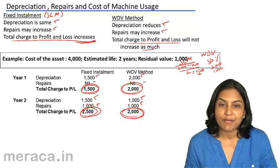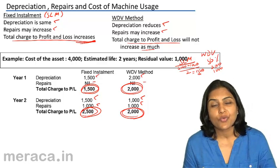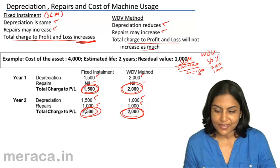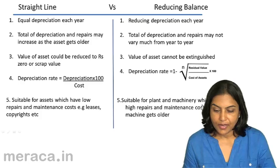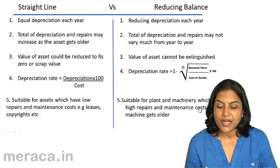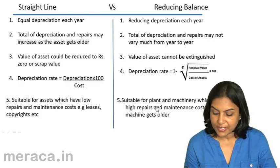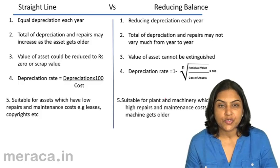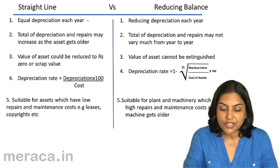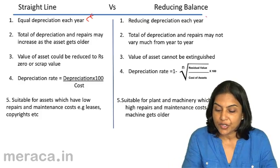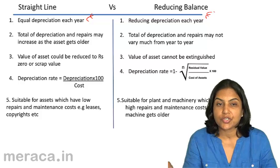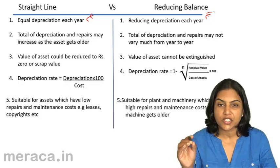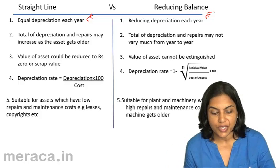The straight line method is preferred in those instances where there are hardly any repairs and maintenance expenses. In a formal comparison of straight line versus reducing balance method: under the straight line method, depreciation charged each year is equal. But under the reducing balance method, depreciation reduces each year, because it is a fixed rate on a reducing balance.